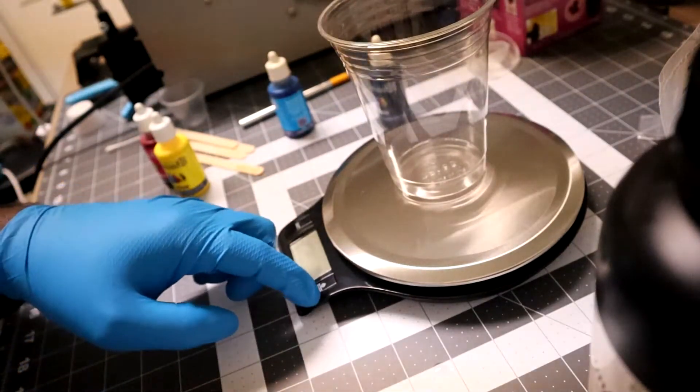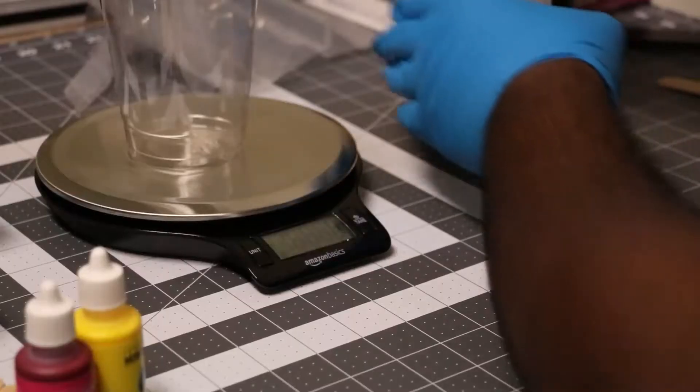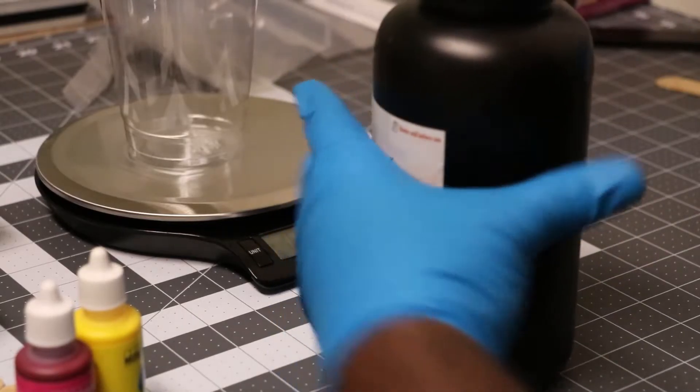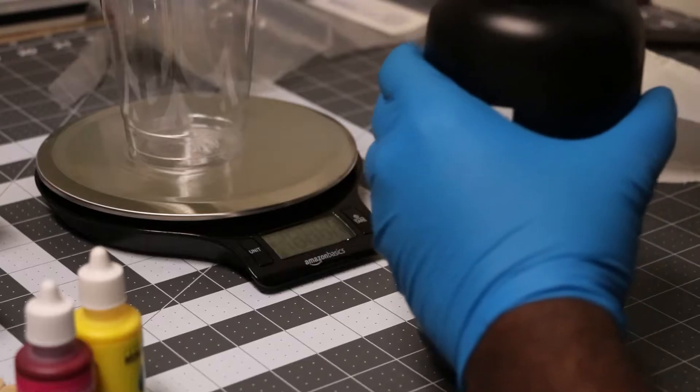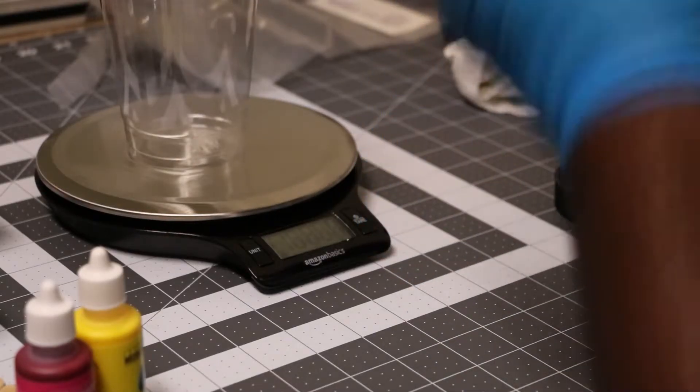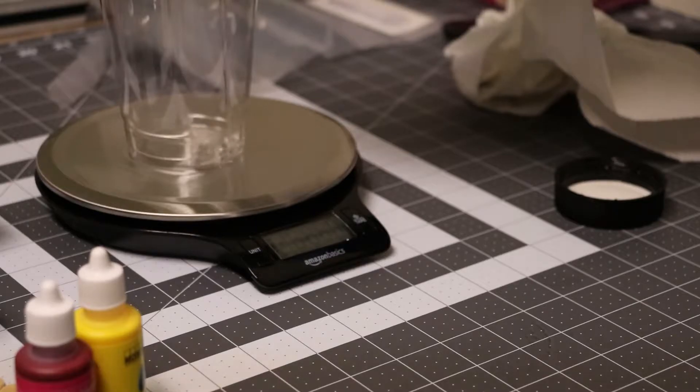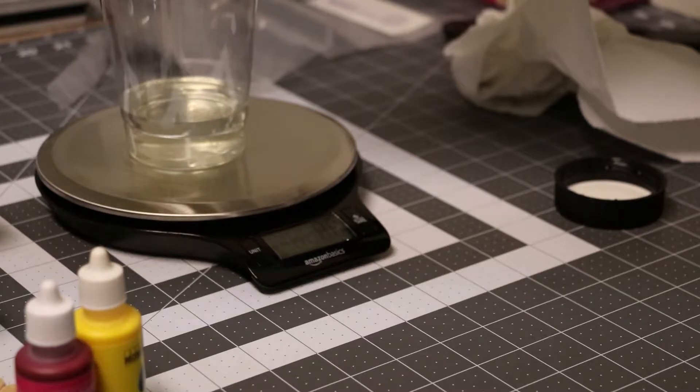I have out my gram scale, an Amazon Basics kitchen scale, and I'm going to measure out 100 grams of resin. That's the recommended dye amount that Monocure wants you to use, so that's what I'm going with. It's also a good small batch that should be good for most projects.